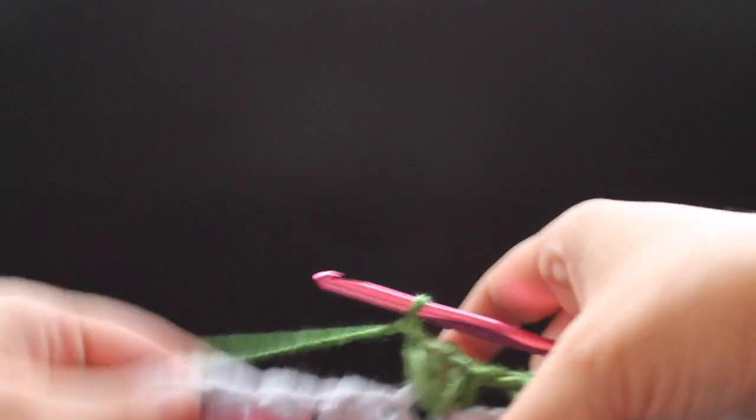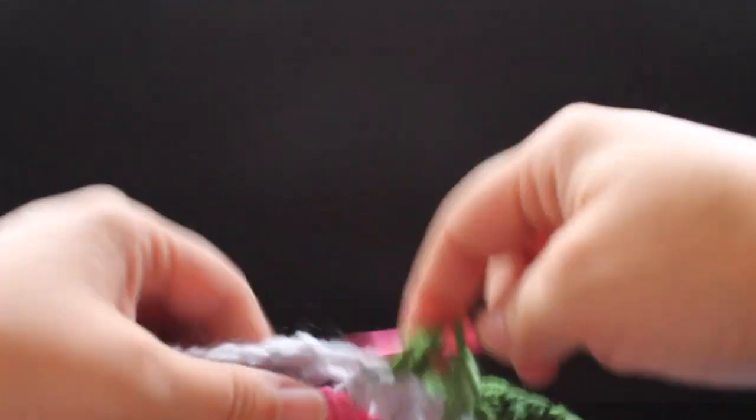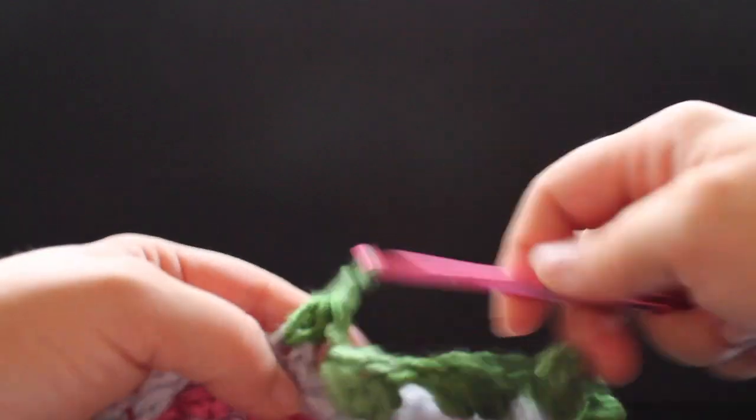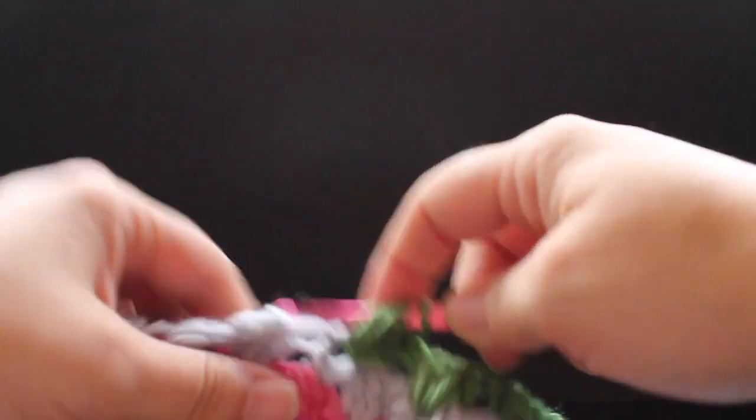Continue repeating that across - chain one, small puff v-stitch in the half double crochet v-stitch. And I'll meet you at the end of the round.